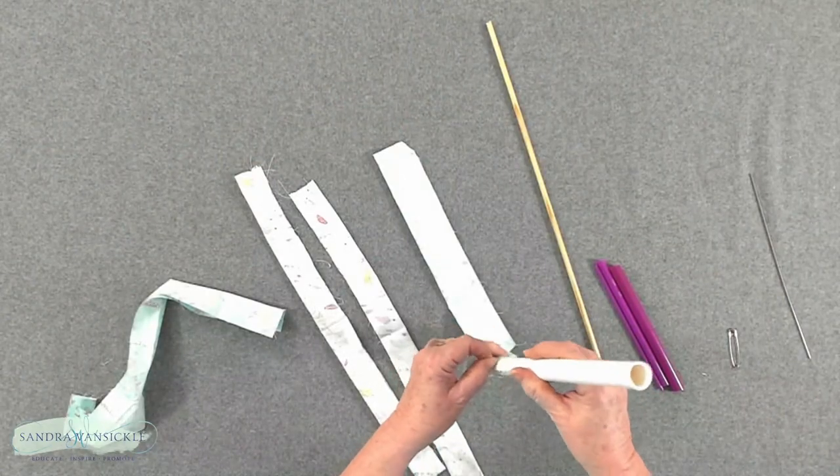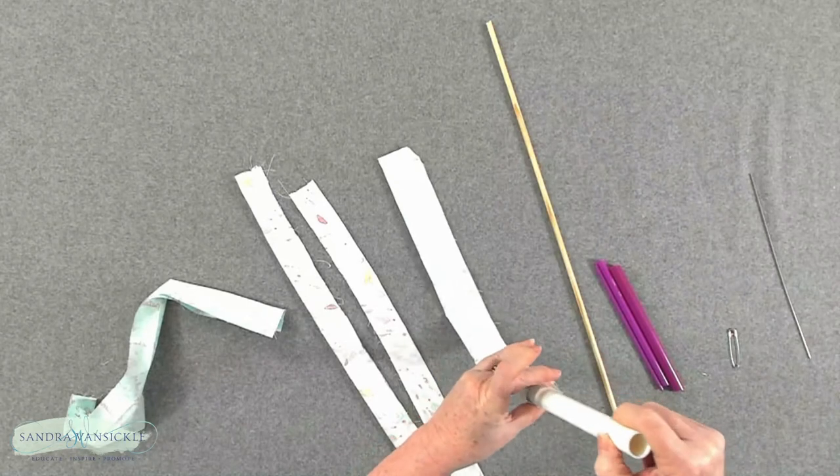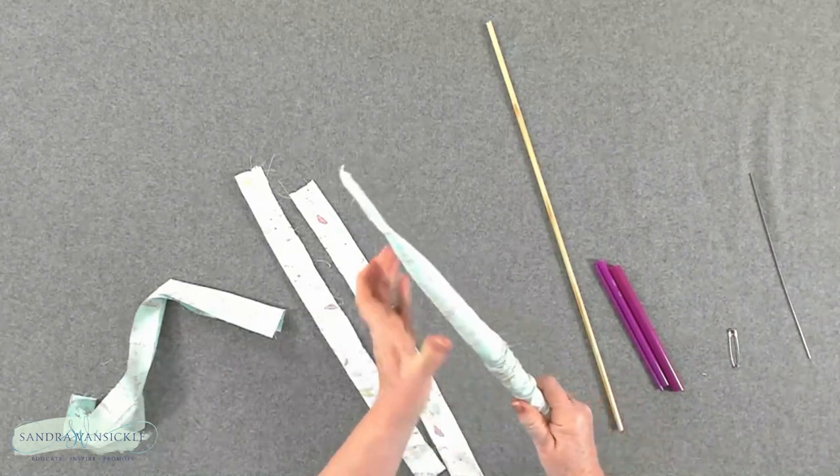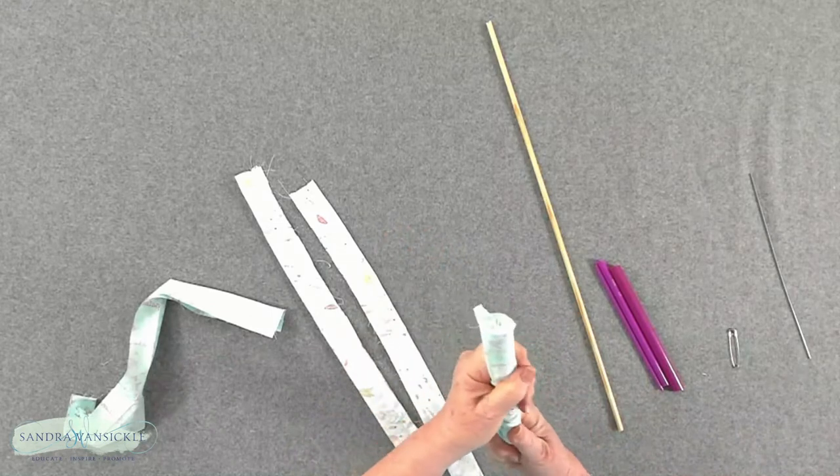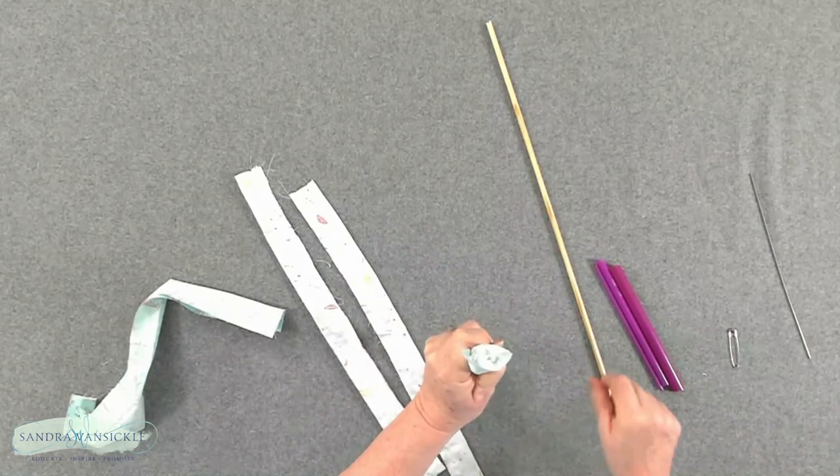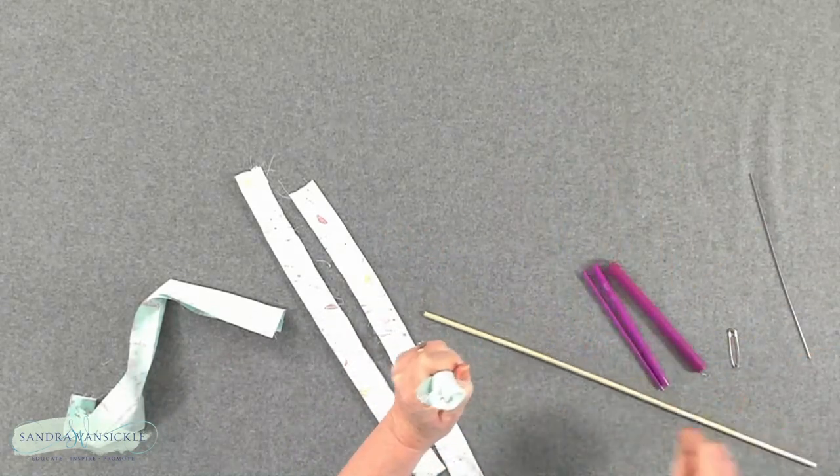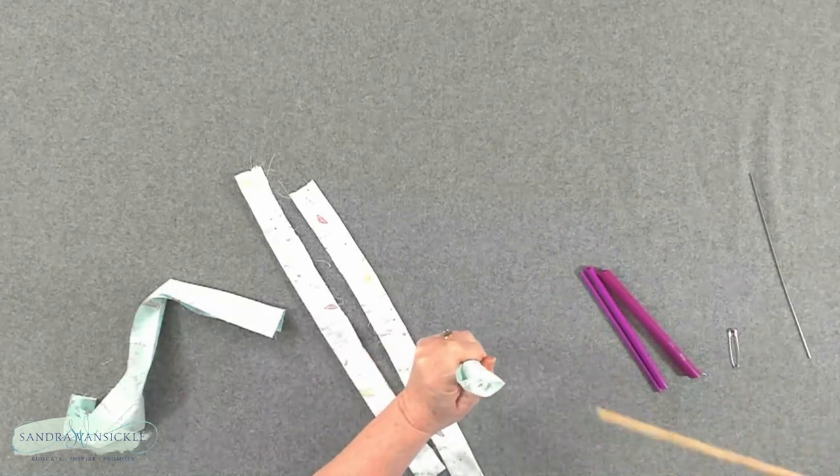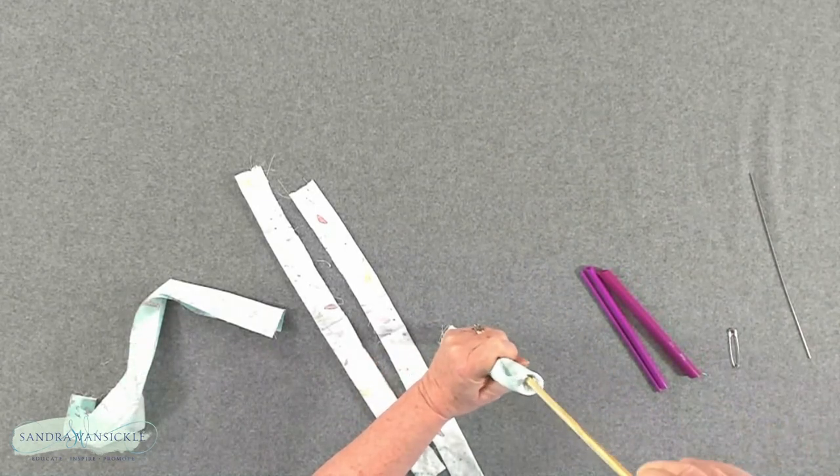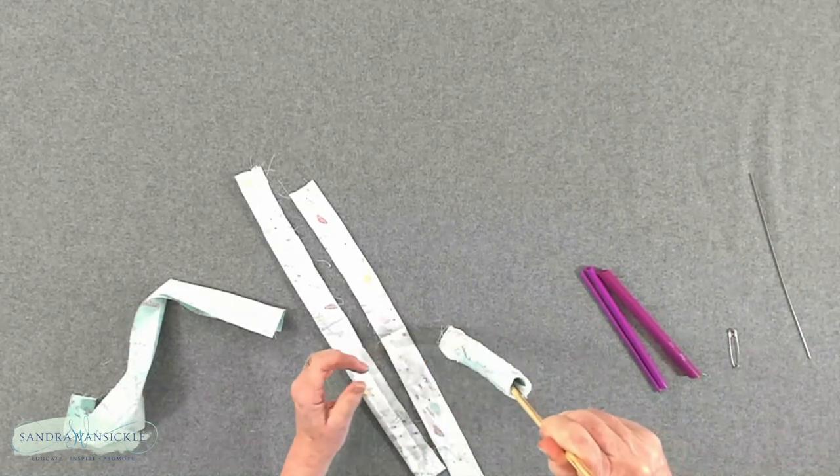The first thing you're going to do is take this piece of pipe and you're going to insert it into the opened end. I'm just going to slide it right through, and then here's the other end that is sewn. You're just going to take the dowel and poke it gently in there. Now watch, you can see.